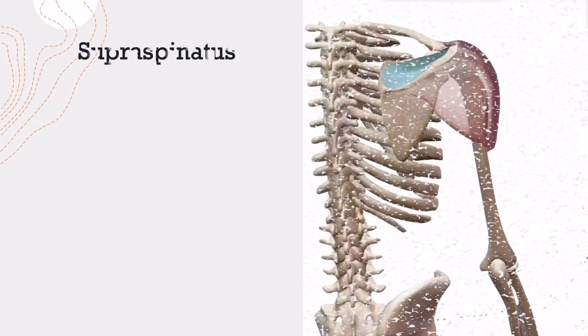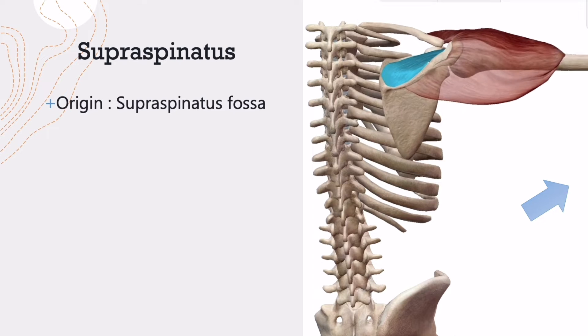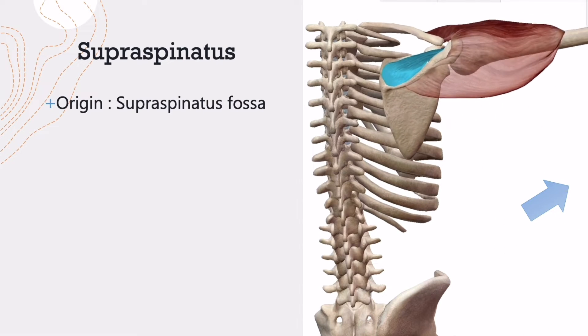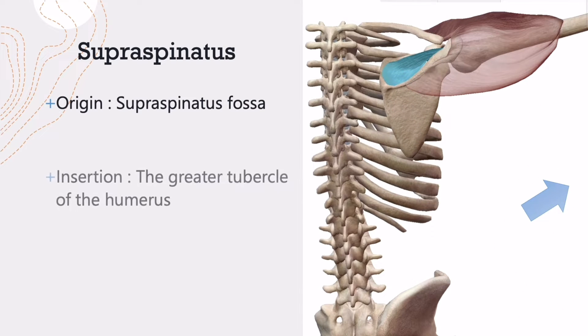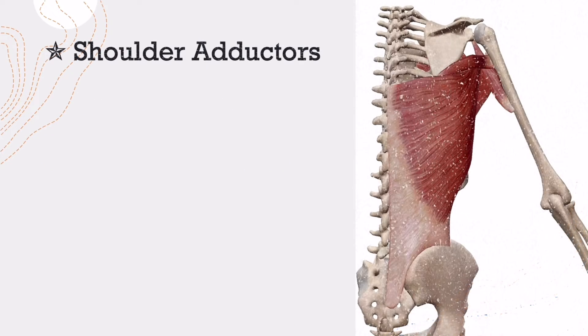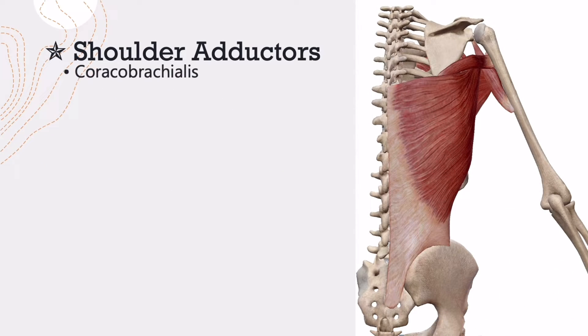Supraspinatus muscle originates from the supraspinatus fossa and inserts at the greater tubercle of the humerus. What about shoulder adductors?